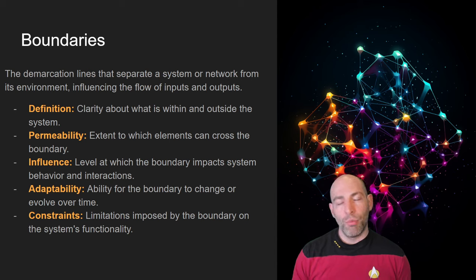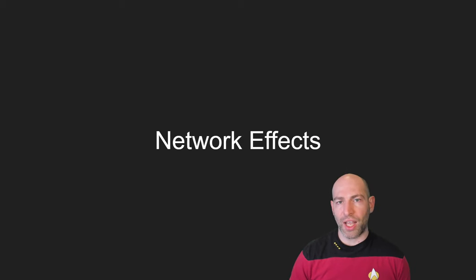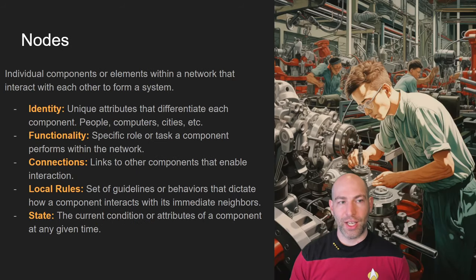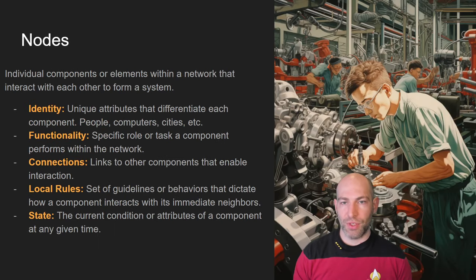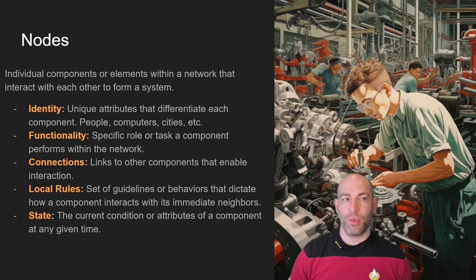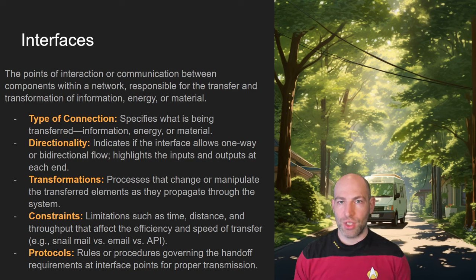When thinking about networks, you need to consider their boundaries and most importantly the permeability or vulnerability of those network systems. For a quick recap: a network is just an interconnected set of components with linkages and relationships, viewed holistically as a whole. Within the network are nodes — the individual elements or components — with their own identities, functions, roles, rules, and states. There are also interfaces, which are the actual connections between nodes in the network. A network is fundamentally just nodes and interfaces.